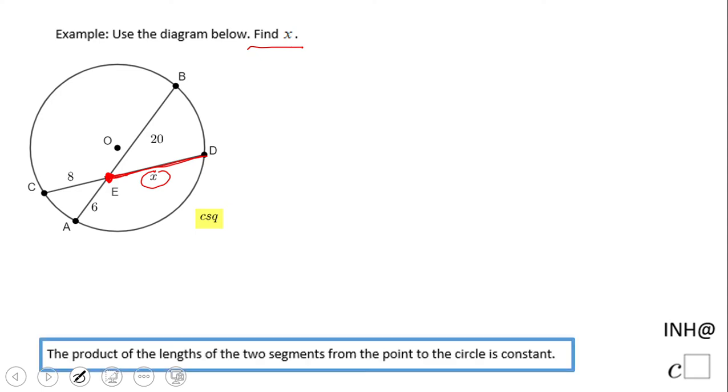What is cool about this point E regarding the circle is down here: the product of the lengths of the two segments from the point to the circle is constant. That means that ED times EC is a constant. I can put any number, I'm going to put a K here.